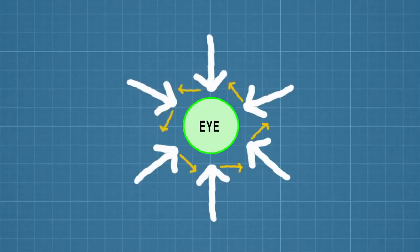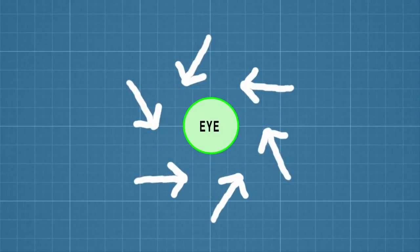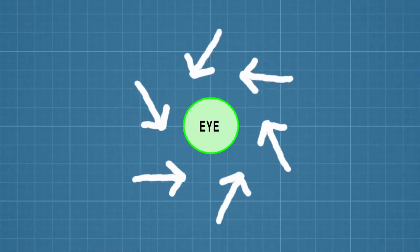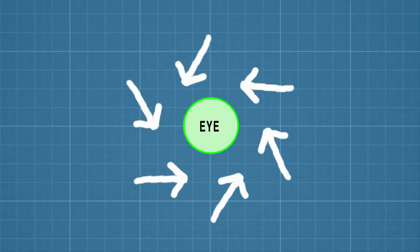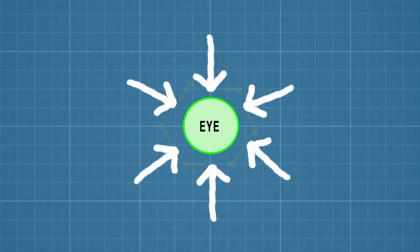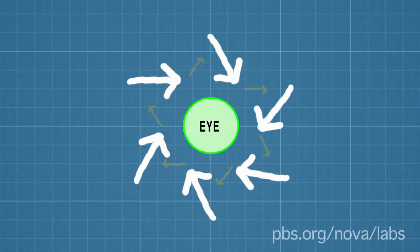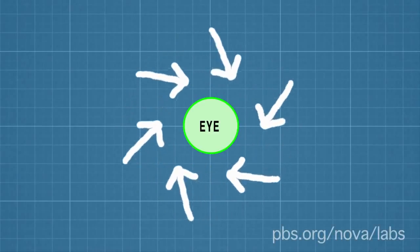In the northern hemisphere, the volumes of air on all sides of the eye keep getting tugged slightly to the right. The air keeps trying to make its way to the middle and keeps getting deflected, causing the entire system to spin in a counterclockwise direction. In the southern hemisphere, where the Coriolis effect pulls air to the left, the opposite happens — storms spin around the eye in a clockwise manner.